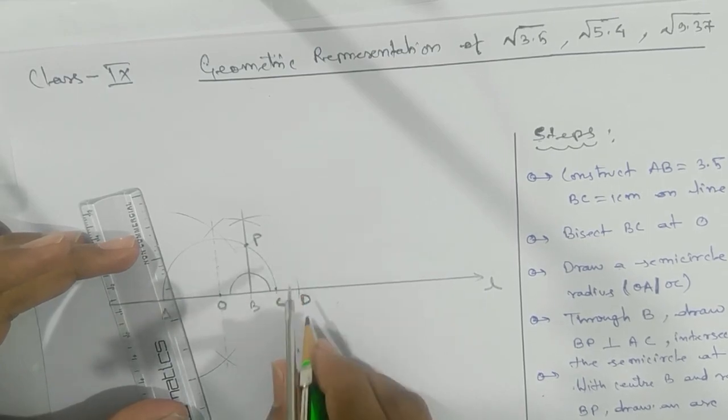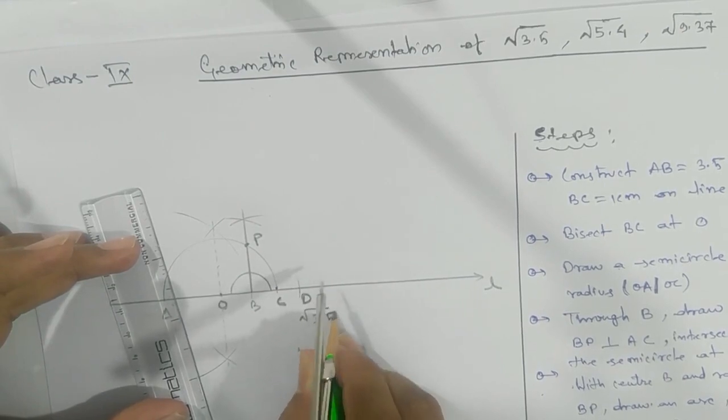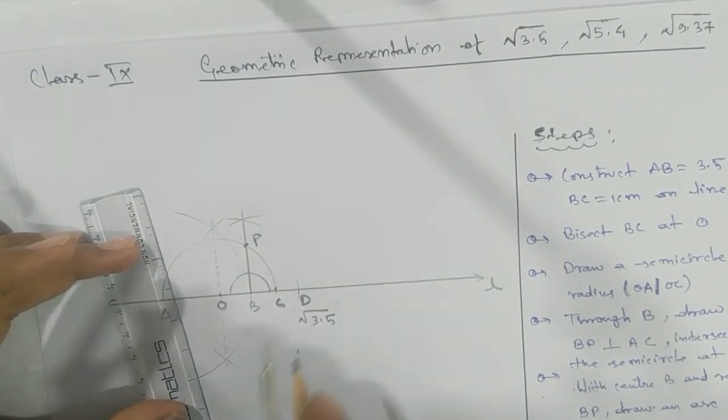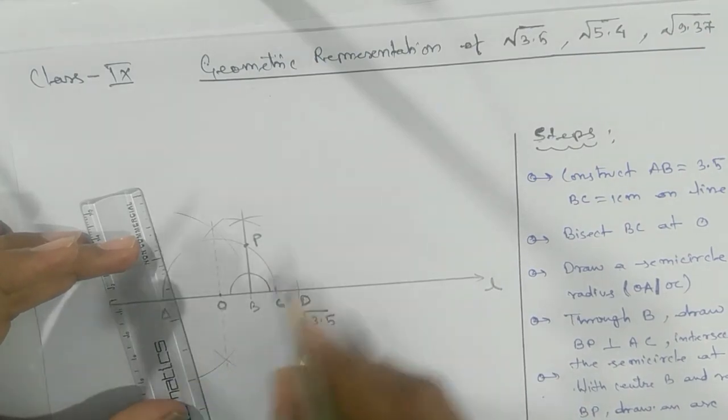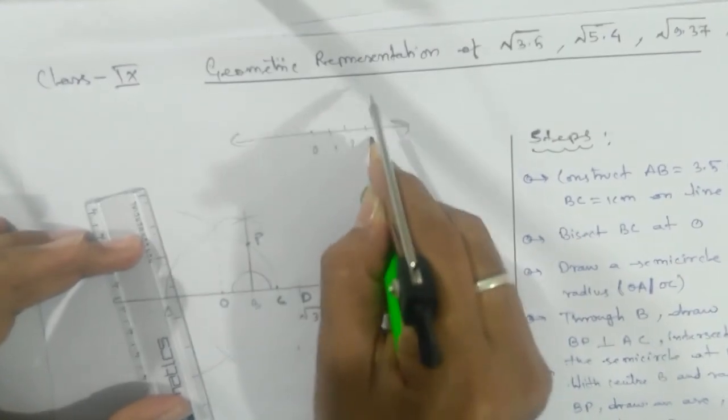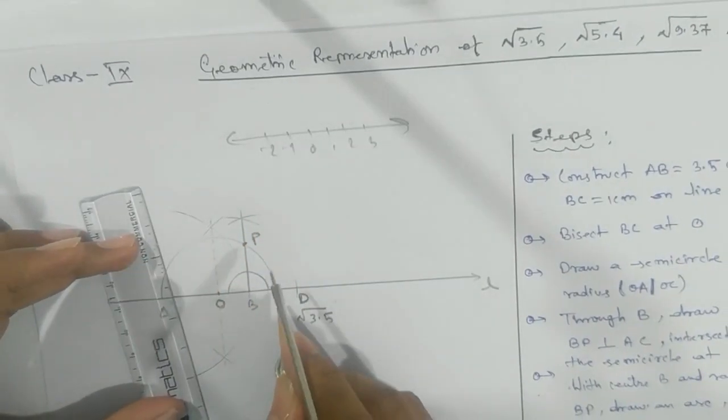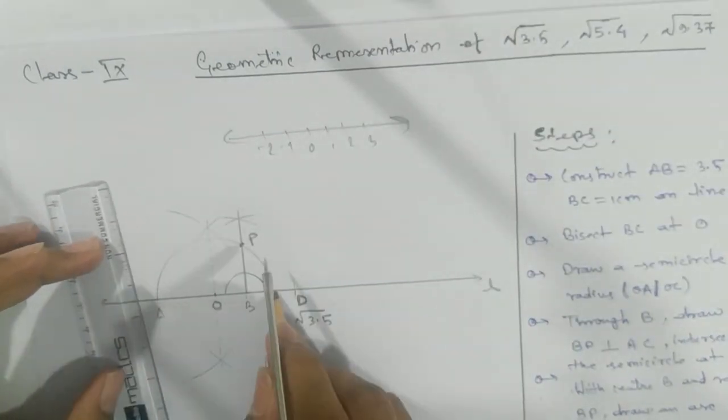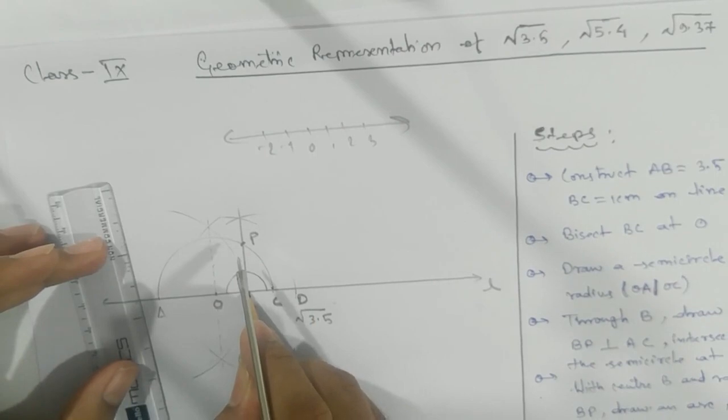is the required point. This will give you √3.5. Now, could you tell me which will be your origin? That means, in a number line, we start with 0, 1, 2, 3, and so on, and -1, -2. So can you tell me which point will give you 0? Yes, B! This is your 0. This is your 1 - remember, BC equals 1 centimeter.